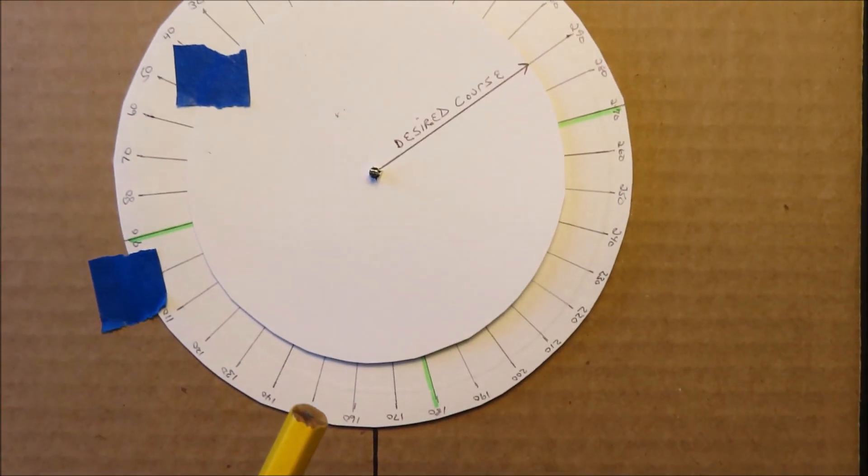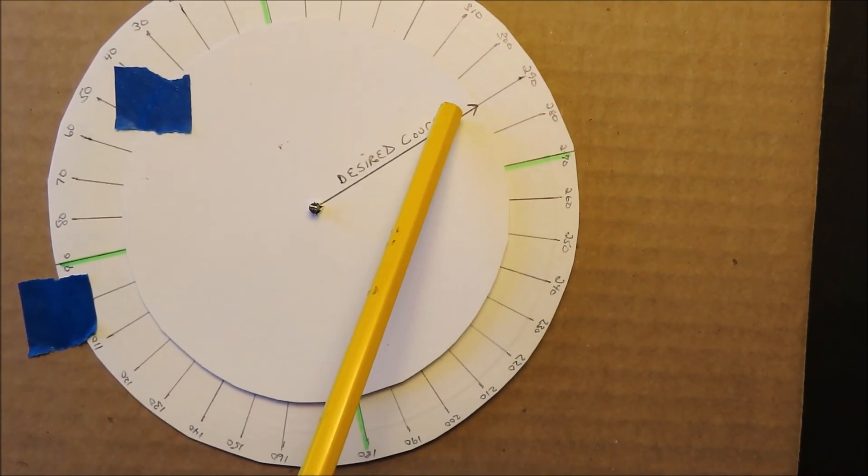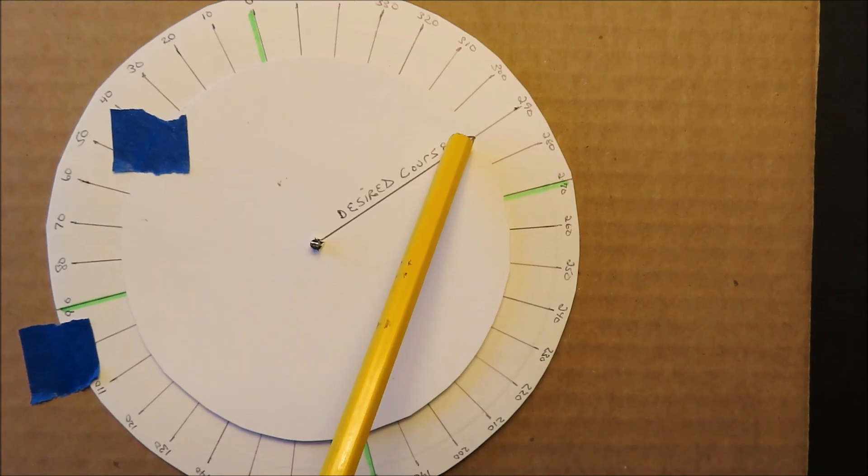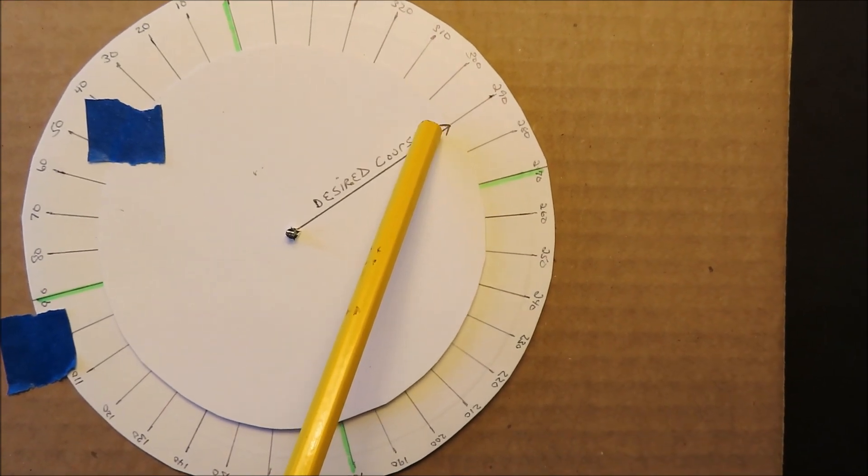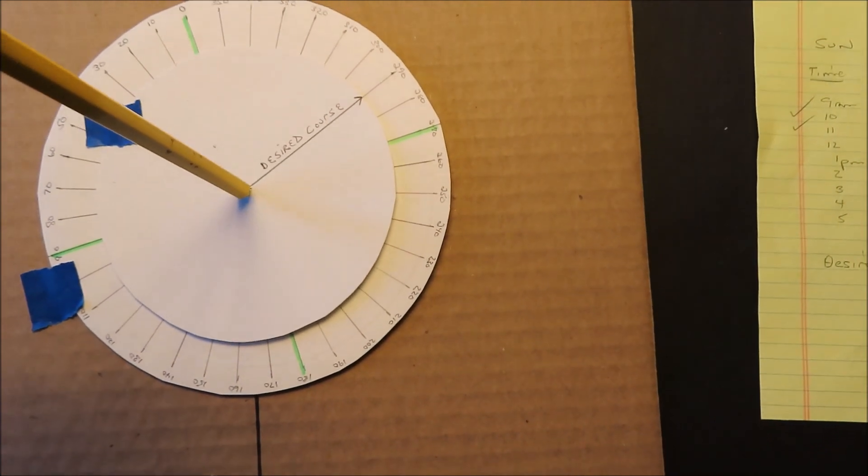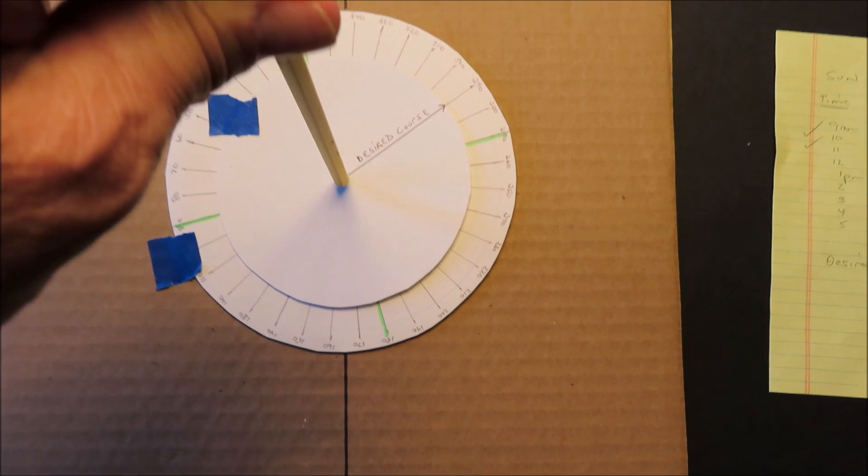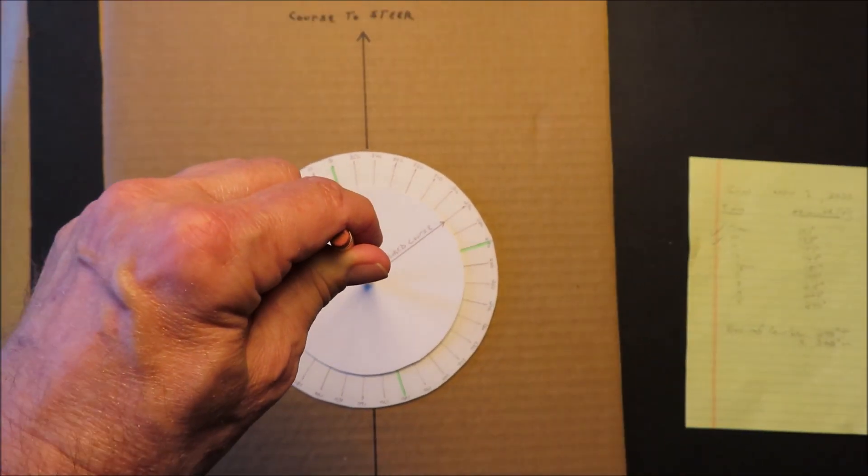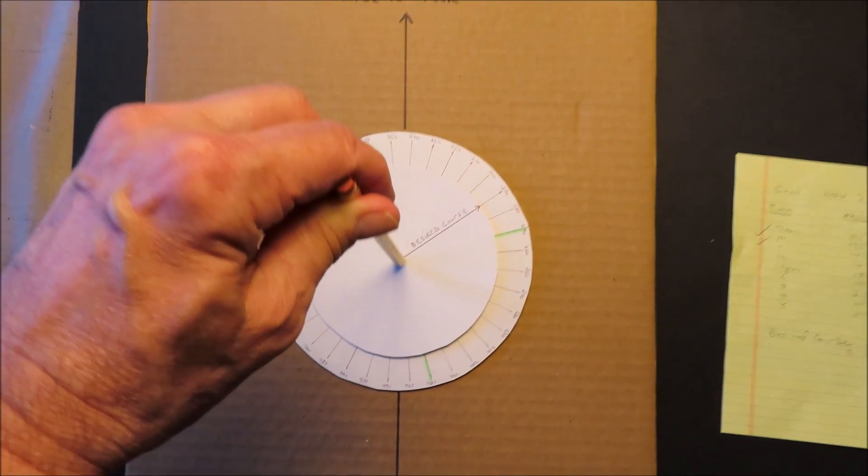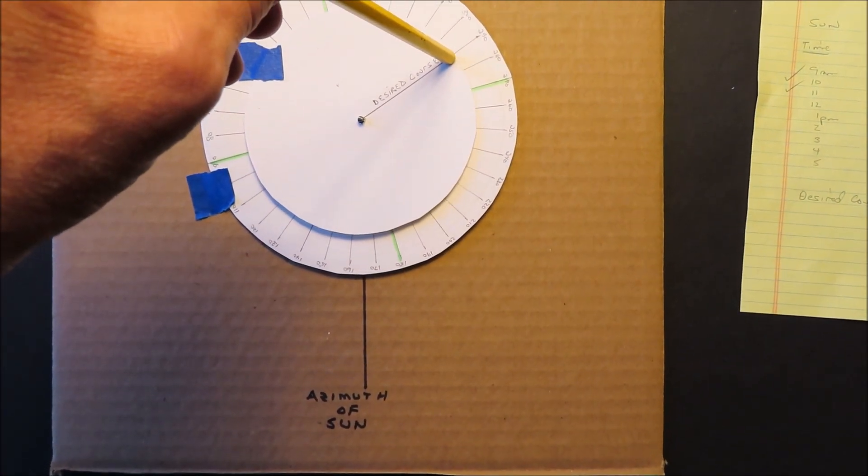And then I'm going to want to travel at a bearing of 290 degrees. So I have that dialed in up here. And then when I go outside, I'm going to put my pencil like this. And then I'm going to turn the whole arrangement until the shadow from this pencil falls on this line right here where I want to go.